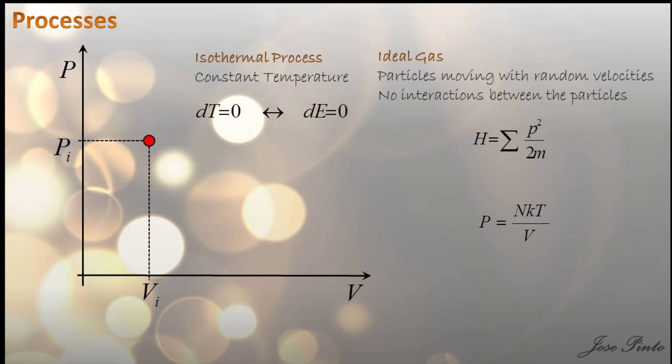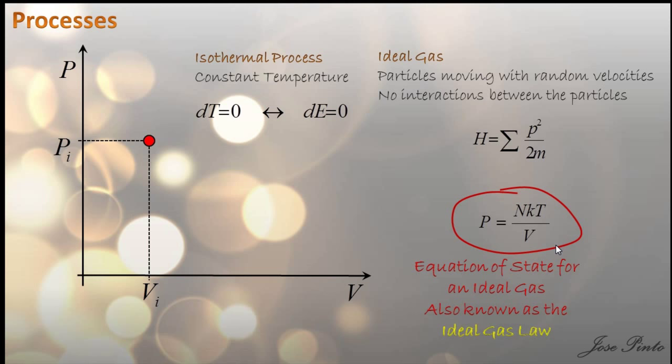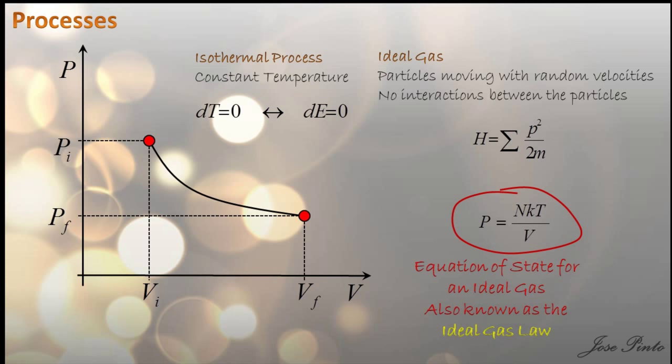So this is the equation of state. Constant temperature, constant number of particles, and this here is the Boltzmann constant — all of this is just a constant over the volume. So the graph looks like this. If you want to know the work done by the gas, just integrate this.